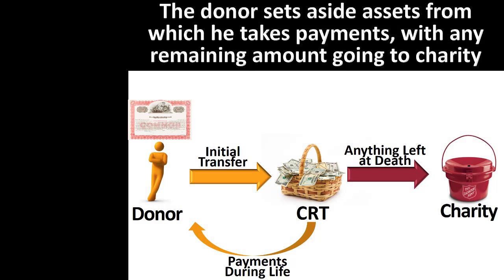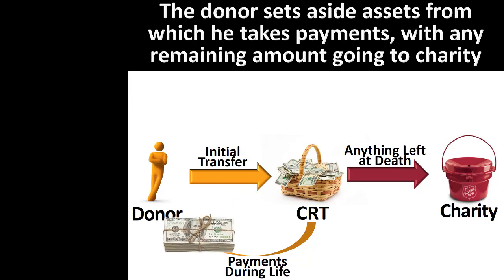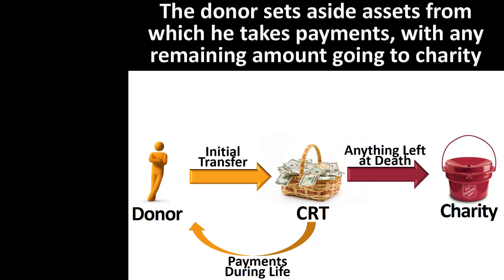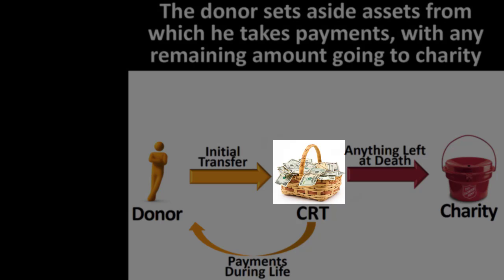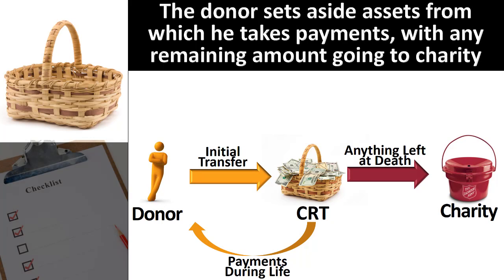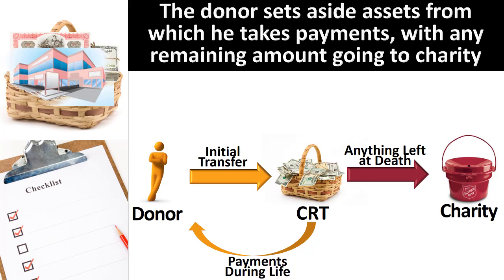The most common form of a charitable remainder trust is one where the donor places assets into a trust from which he receives payments for life, with any remainder going to the charity at death. In the accompanying image, the charitable remainder trust, labeled CRT, is pictured as a basket holding cash. A trust is, essentially, a basket with instructions that holds money or other assets. The charitable remainder trust is no exception.